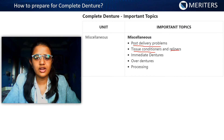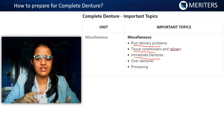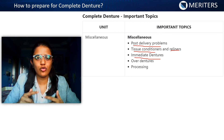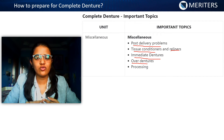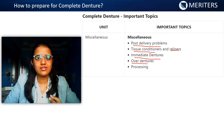You need to know about immediate denture — why it is used, its advantages, and disadvantages. The major disadvantage of immediate denture is that it requires frequent relining. Then comes overdenture: tooth-supported versus implant-supported overdenture, why overdenture is used, and its advantages and disadvantages.